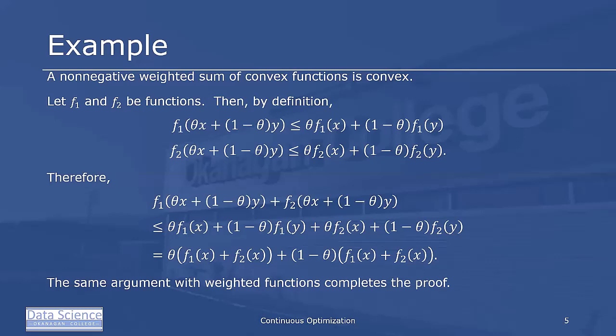Combining these two facts, we can see that αf₁(x) + βf₂(x) will be convex for any α and β greater than zero. This closure property can be extended using a similar argument for non-negative weighted sums of more than two convex functions.